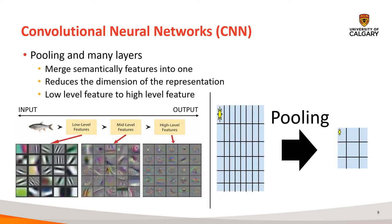CNNs exploit the property that natural signals are compositional hierarchies, meaning higher-level features are obtained from composing lower-level features. Each layer in a CNN acts on the output of the previous layer. The closer to the input a layer is, the rawer the data it acts upon. So the first layers learn to detect lower-level features — in the case of images, simple straight edges. As we go deeper into the network, layers learn to detect more complex features like curved edges, then shapes, then textures, and so on. Another operation happening between layers is pooling, which means picking the maximum value of a local group of features and discarding the rest, reducing the dimensionality of the representation and creating invariance to small shifts and distortions.